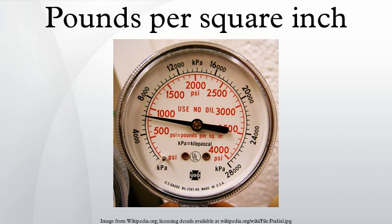The converse is pounds-per-square-inch gauge (PSIG), indicating that the pressure is relative to atmospheric pressure. For example, a bicycle tire pumped up to 65 psig above atmospheric pressure will have a pressure of 65 plus 14.7 equals 79.7 psia, or 65 psig.